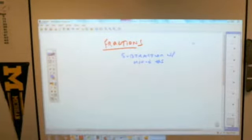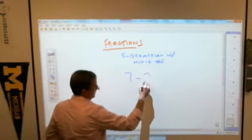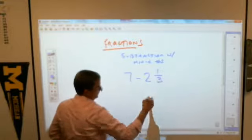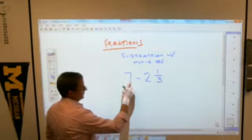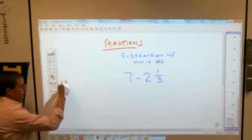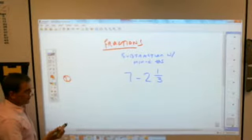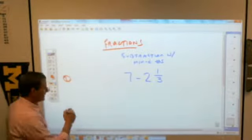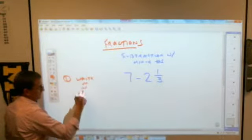Here is our example problem. Let's say you have 7 minus 2 and a third. The only difference between this and what we've done before is I don't believe we had whole numbers over here. Let me make sure I'm not going too fast. Yeah, that's right. Just like always, everybody knows, the first step when it comes to subtracting fractions is line them up.